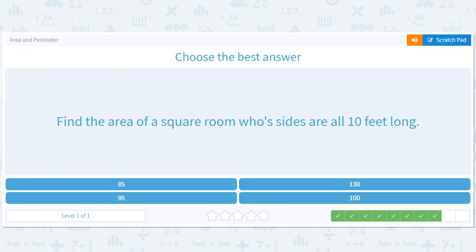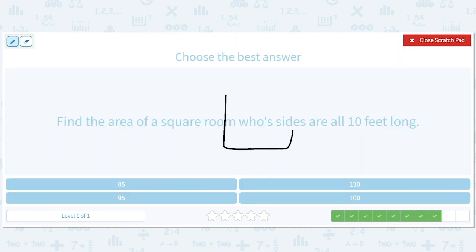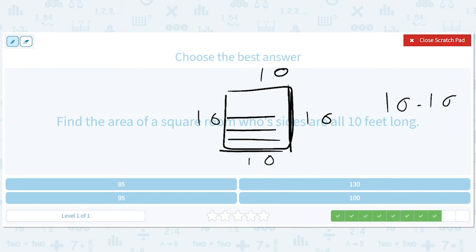Find the area of a square room whose sides are all 10 feet long. Okay. Well, we've got 10 and 10 and 10 and 10, but we just have to multiply 10 times 10, right? We take each of these 10s and we multiply it by 10. So we get 100.